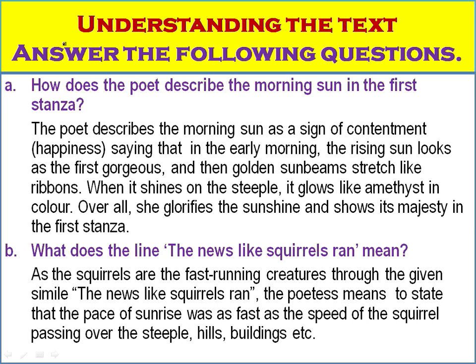Understanding the text, Question A: How does the poet describe the morning sun in the first stanza? The poet describes the morning sun as a sign of contentment and happiness. In the early morning, the rising sun looks gorgeous, and the golden sunbeams stray like ribbons of different colors. When it shines on the steeples, it glows like amethyst — like purple stones. Overall, she glorifies the sunrise and shows its majestic power in the first stanza.